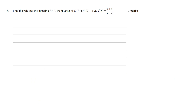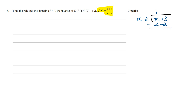Find the rule and the domain of f inverse, where f is defined by the given rule. To find the rule of f inverse, the first thing we need to do is rewrite f of x in proper fraction form using the polynomial division method. Dividing x minus 2 into x plus 3: x goes into x once, giving 1 times x minus 2, and subtracting gives a remainder of 5. So f of x in proper fraction form is 1 plus 5 over x minus 2.